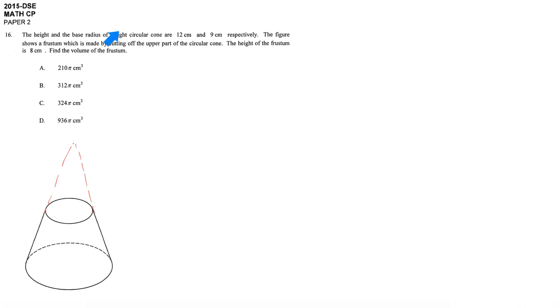It's given that there is a cone with height 12 cm and base radius 9 cm. So we have our original cone with height 12 cm and base radius 9 cm.